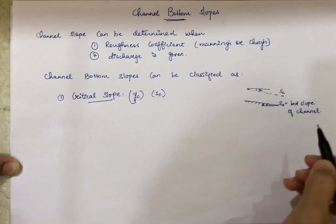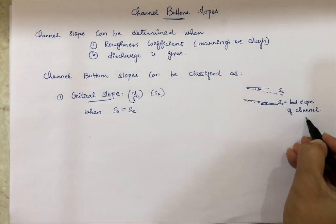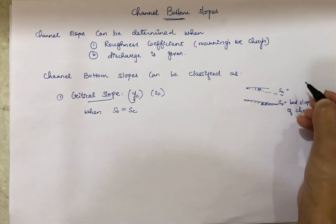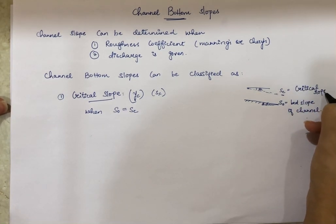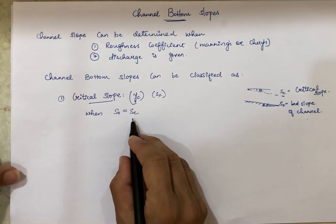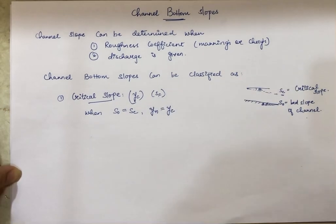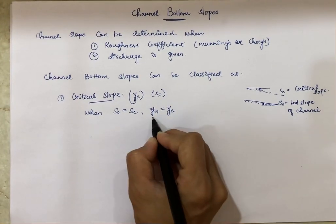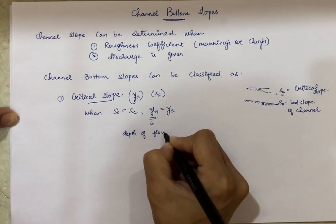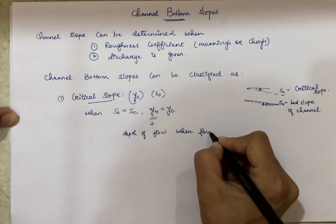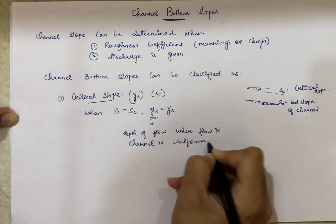So when S0 becomes equal to Sc — where S0 is the bed slope of the channel and Sc is the critical slope — in that case the depth of flow yn will be equal to yc. Now, yn refers to the normal depth, which is the depth of flow when flow in the channel is uniform.